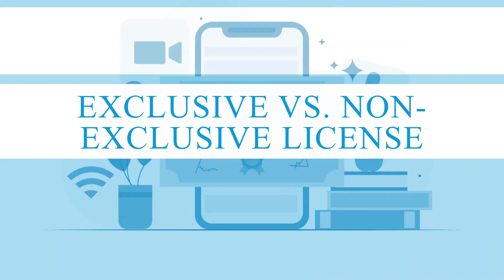The license agreement in a licensing deal could be exclusive or non-exclusive in nature — these two terms are used very often in the industry. As the name indicates, an exclusive license is one which is granted by the patent holder to only one party, and such party can prevent everyone else, including the patent holder, from using the patented invention in any manner. In this case, the licensee almost becomes the owner of the patent.